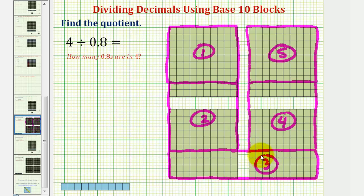So this shows we have exactly five copies of eight-tenths in four, and therefore our quotient is five. Four divided by eight-tenths equals five.